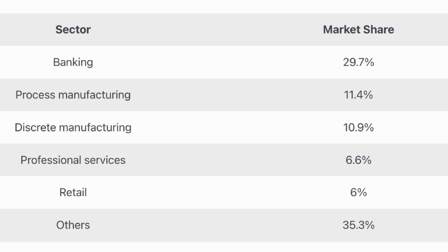On the very first list we have the banking system. Decentralized finance is one of the biggest things in the digital world — banks are adapting, launching products like flash loans, and banking holds 29.7% of the market share. Then comes process manufacturing at 11.4%, direct manufacturing at 10.9%, professional services at 6.6%, retailers at 6%, and others at 35.3%. You can see the market and decide which area you want to go into.